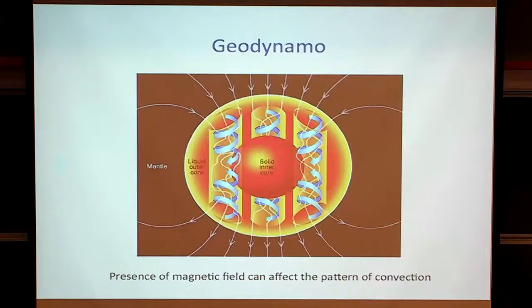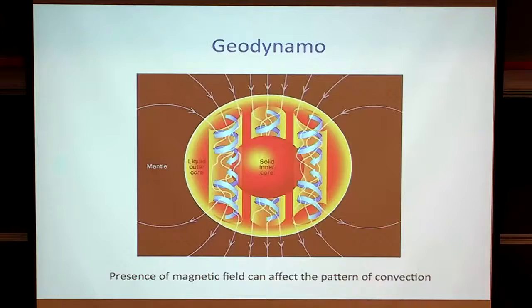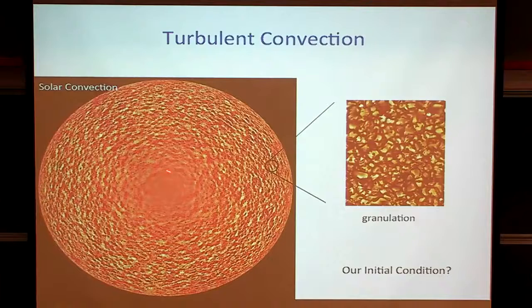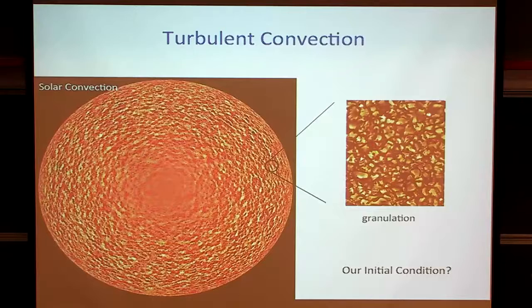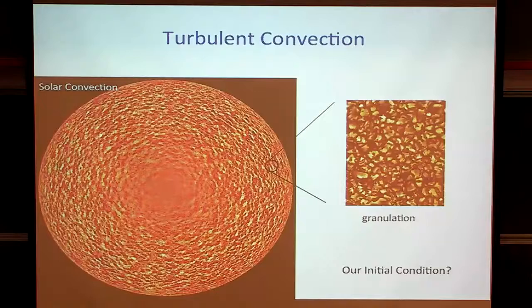Finally, turbulent convection. An image of the Sun obtained by Doppler measurements from the SOHO satellite shows convection cells — bright regions where material is rising toward us and dark regions where it's receding — embedded within a much finer-scale granulation pattern. This is a very different style of convection from the mantle or core, but it's likely relevant for thinking about early planetary states like magma oceans, which set the initial conditions. Understanding and characterizing these very challenging flows is an important part of making progress.